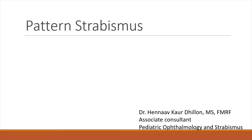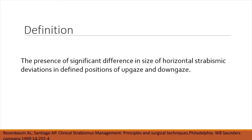We're going to talk about pattern strabismus today. What is pattern strabismus? It is the presence of a significant difference in the size of the horizontal strabismus deviation in defined positions of upgaze and downgaze. Basically, it is nothing but vertical incomitance in horizontal strabismus.